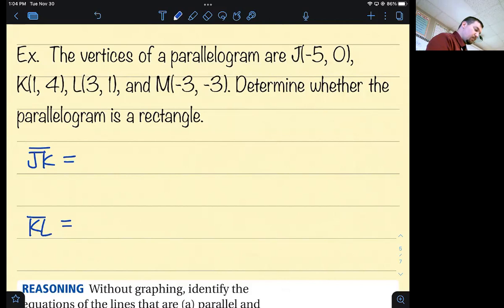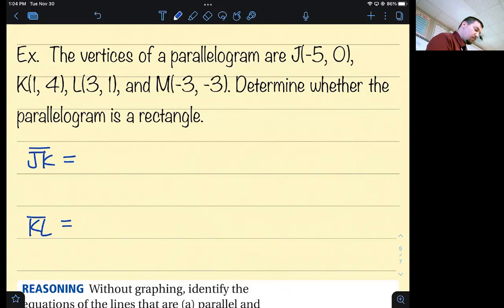The slope of JK is y₂ minus y₁ over x₂ minus x₁, which is 4 minus 0 over 1 plus 5. I'm changing minus negative 5 to plus 5. What is 4 minus 0? Four. What's 1 plus 5? Six. That reduces to 2/3.